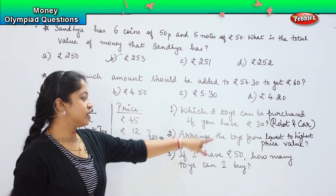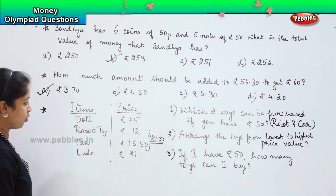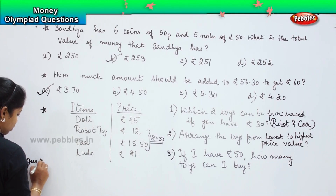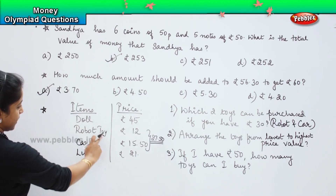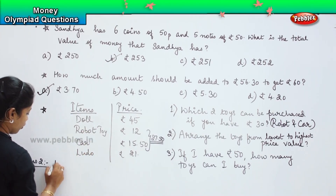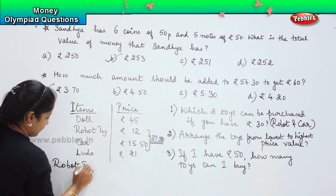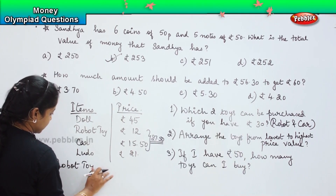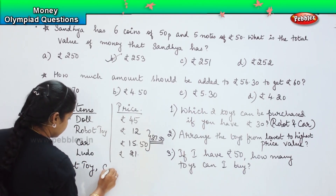Arrange the toys from lowest to highest price. What is the least price? It is the robo toy at rupee 12. After that, the next value is the car at rupees 15.50.